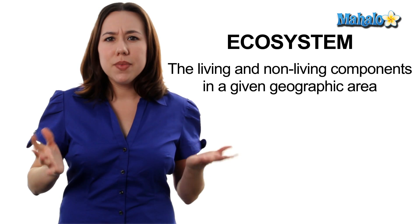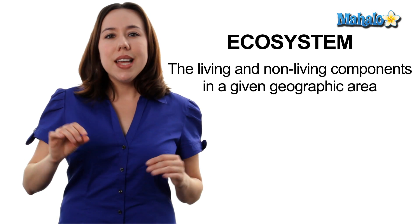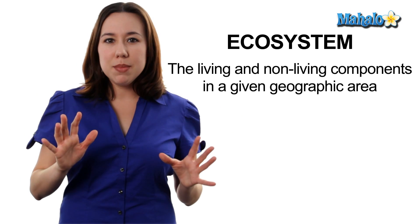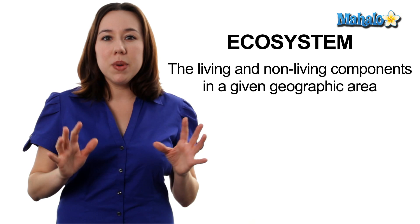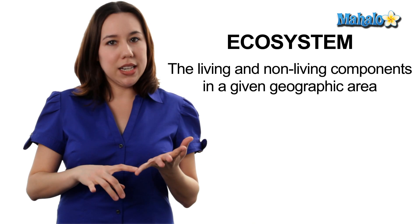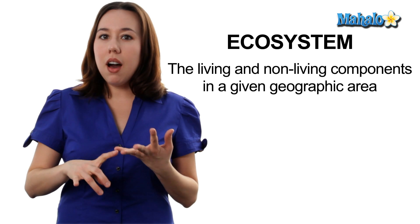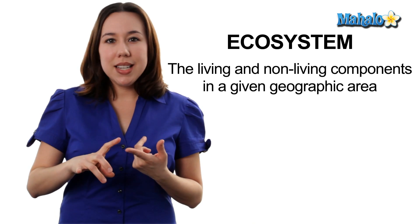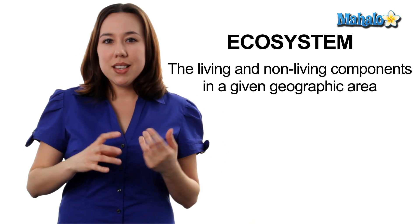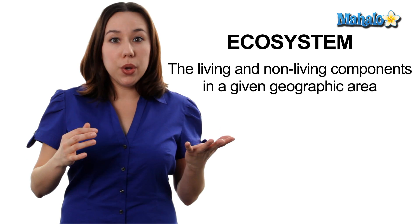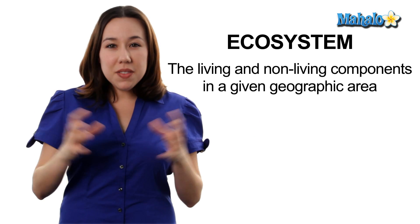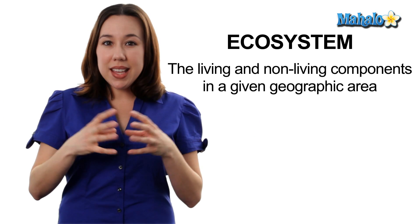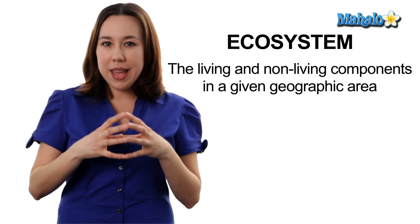What is an ecosystem? Well, it's pretty much all of the living organisms as well as the non-living components like hydrogen, oxygen, carbon, nitrogen, sunlight, water, and soil — all of these things interacting within a given geographic area.